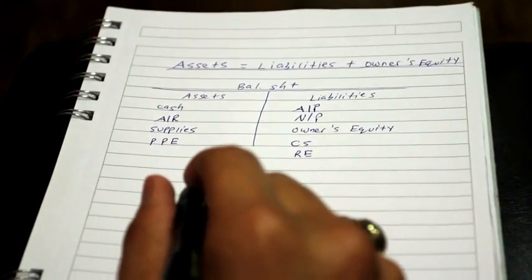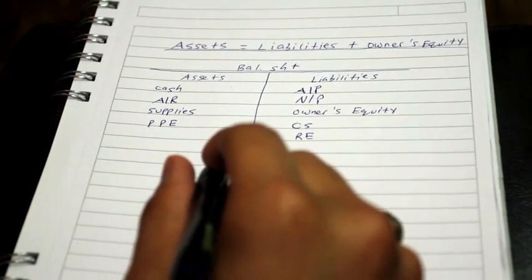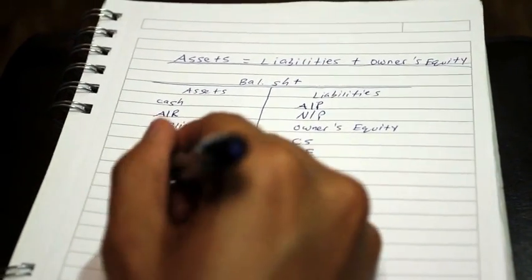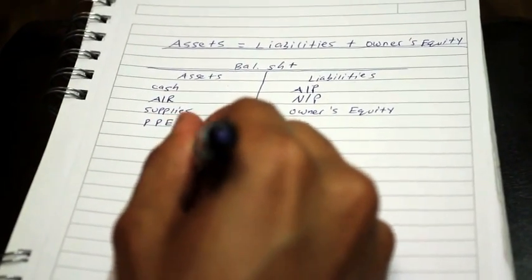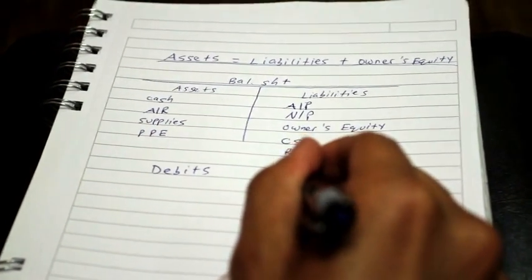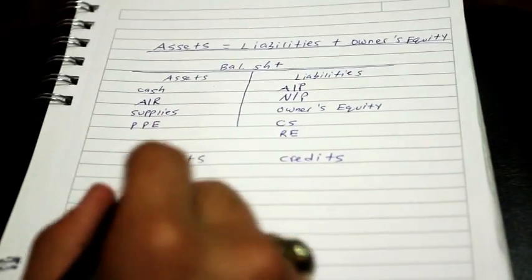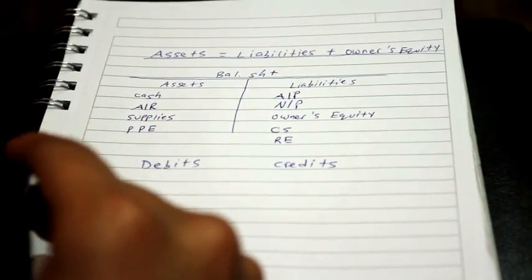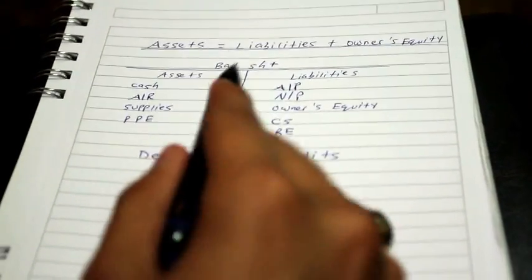The introduction of financial reporting can be dated back to the 1400s with Luca Pacioli, who introduced the idea of having debits and having credits to go about introducing the fluctuations of assets, liabilities, and equity on a balance sheet.